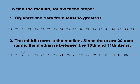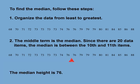Counting to the 10th and 11th terms: 1, 2, 3, 4, 5, 6, 7, 8, 9, 10, 11. Here are the 10th and 11th terms — they happen to be the same value, so the median is 76. If they had been different values, the median would have been the value between the 10th and 11th terms.